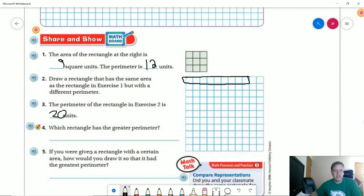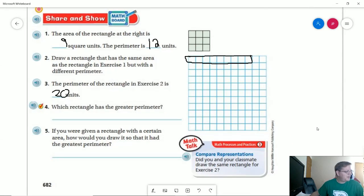Number five, if you give a rectangle with a certain area, how would you draw it so it had the greatest perimeter? Make it as flat as possible. So as much discrepancy between our numbers on the top and bottom then on the left and right. I need some coffee.